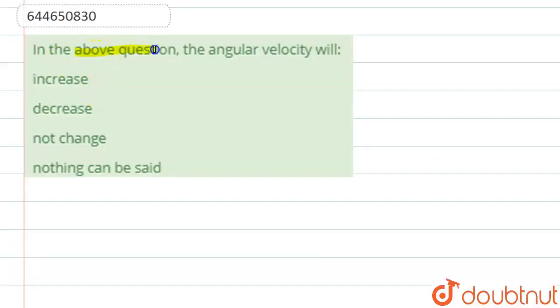Hello students, now we're going to see this question. The question says that in the above question, the angular velocity will—okay, so the question was basically: there was a wheel, and it was being rotated about its axis.